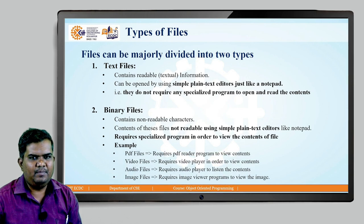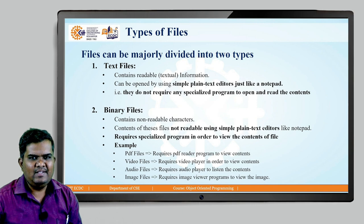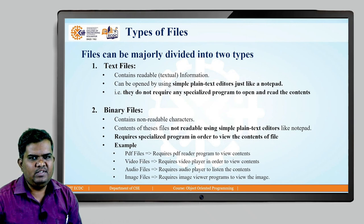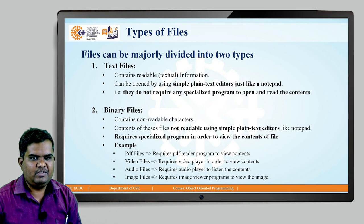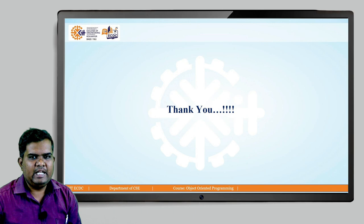For example, a PDF file is a kind of binary file because we require a specialized PDF reader program to read its contents. Video files are binary files because we require a video player to view them. Audio files are binary files because we require a specialized audio player. Image files are also binary files because we require an image viewer. That covers files and the different types of files. In the next lesson, we are going to relate files and streams together. Thank you.